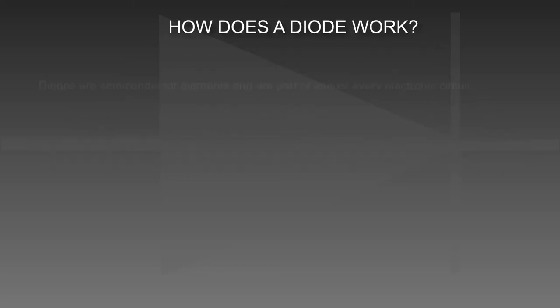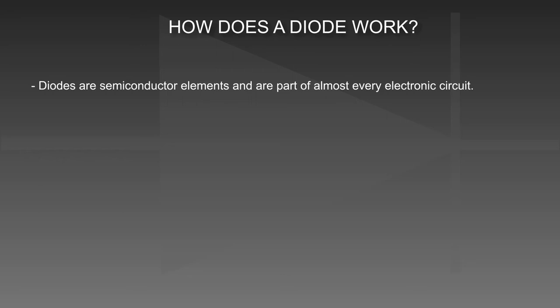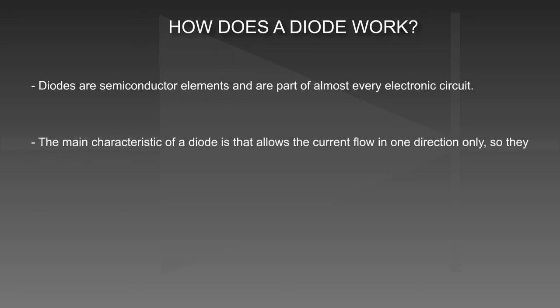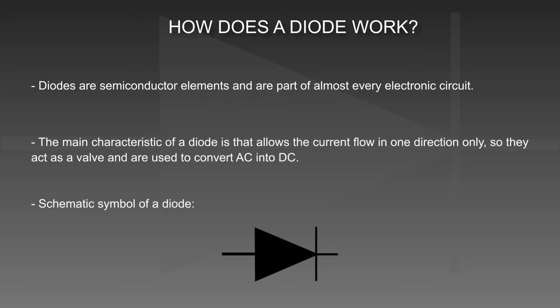How does a diode work? Diodes are semiconductor elements and are part of almost every electronic circuit. The main characteristic of a diode is that it allows current flow in one direction only, so they act as a valve and are used to convert AC into DC.